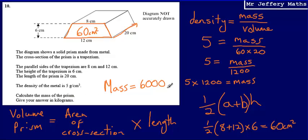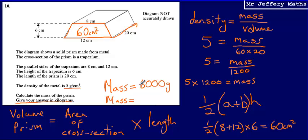We need to be careful here — the question asks us to give the answer in kilograms. We've worked out the mass as 6000 grams, because the density was given in grams per centimetre cubed. Since 1 kilogram equals 1000 grams, 6000 grams is 6 kilograms. So the final answer is 6 kilograms.